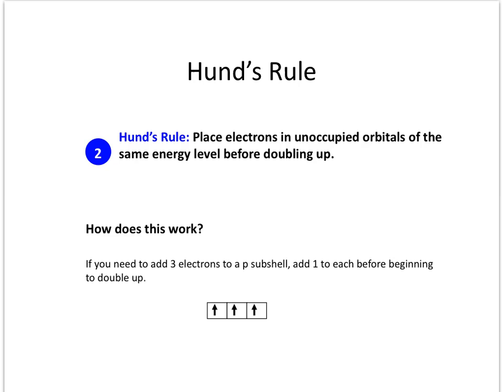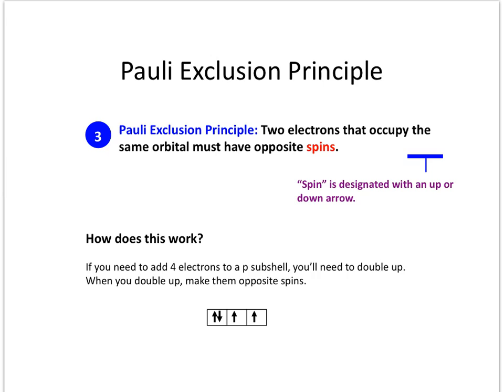There are two other rules we'll see in action in the next unit. Hund's rule says that when you have more than one orbital — that is, the p, d, and f sub-levels — each orbital of equal energy must receive one electron before any orbital gets a second. The Pauli exclusion principle says that when two electrons share an orbital, they must have opposite spins, represented by an up and a down arrow. For example, four electrons in the p orbital are placed as 1, 2, 3, then back to make the fourth pair.